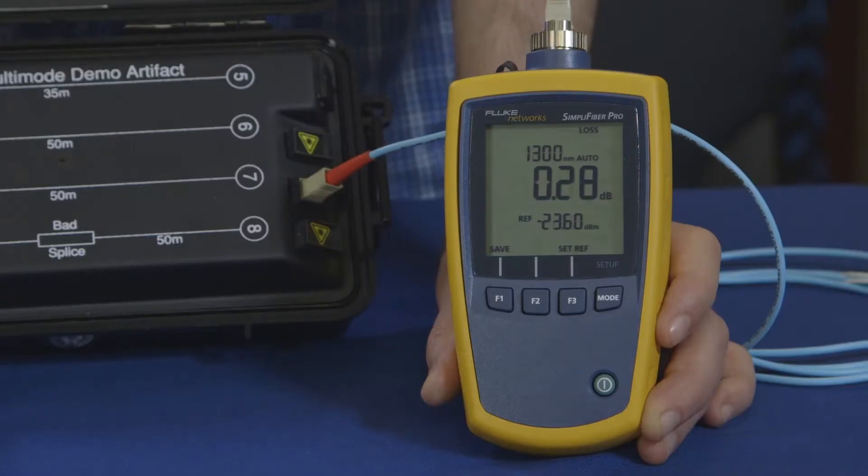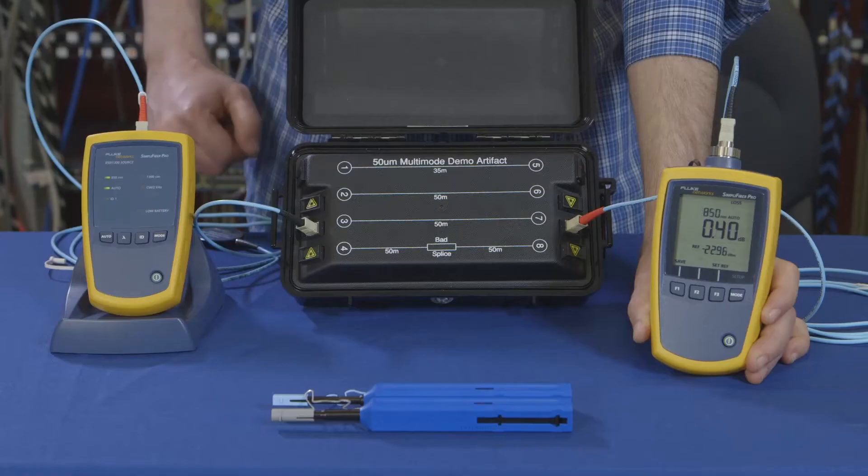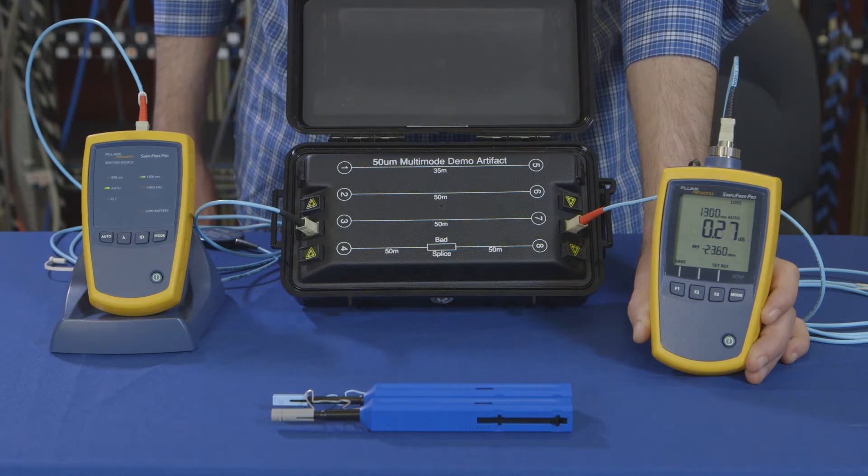You'll notice the source is alternating between 850 and 1300 nanometers giving you both wavelengths in one result. We can now save the result.